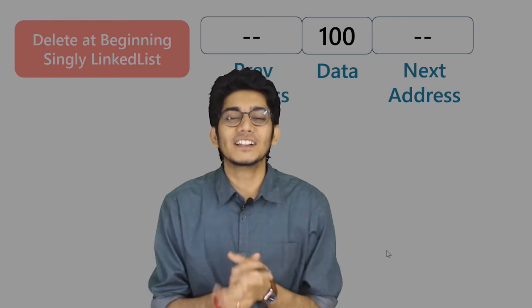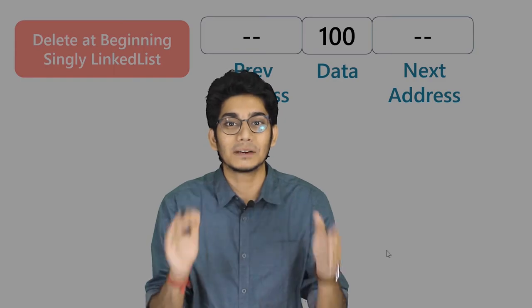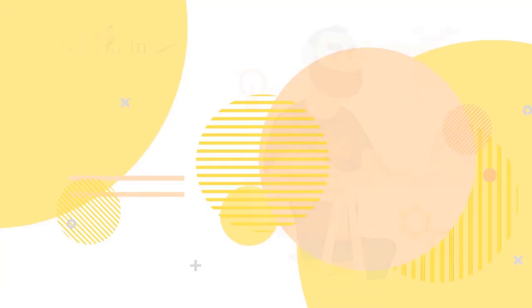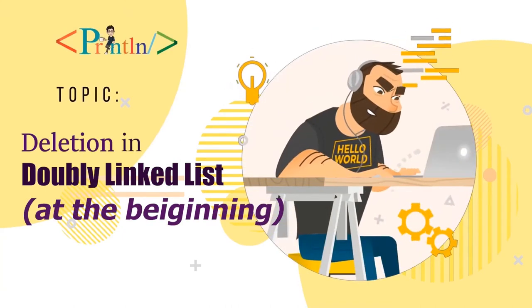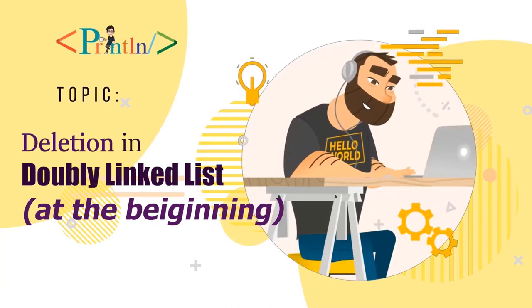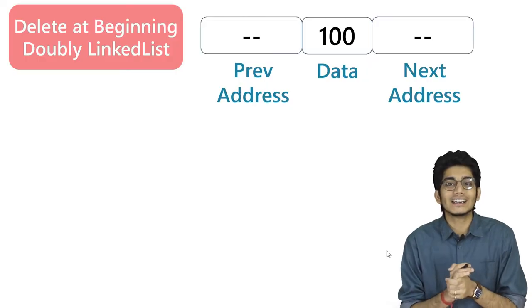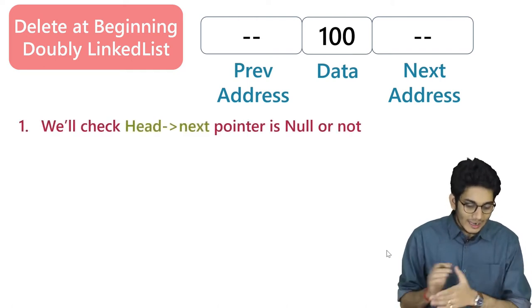In this video we'll see how we can delete any element from the beginning of a doubly linked list.